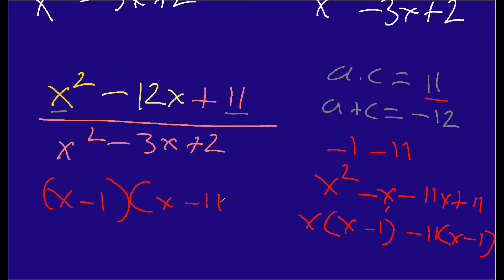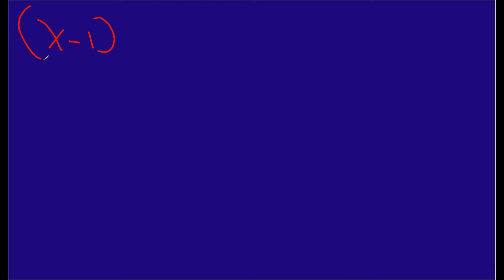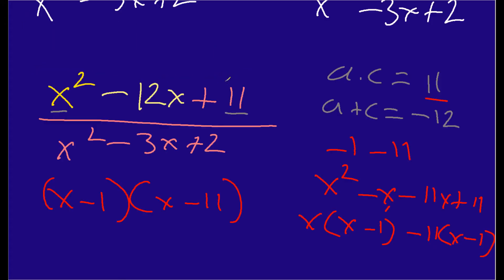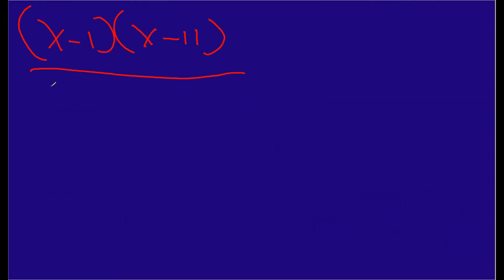So we have x minus 1 times x minus 11 on top, and underneath that we have x squared minus 3x plus 2. Now I need to address the denominator.